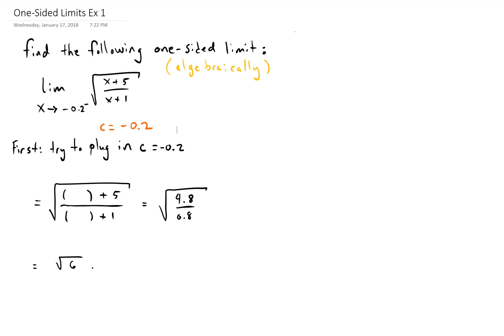Hi, this is Bradley Bush. Today we're going to talk about finding a one-sided limit algebraically. The limit we are dealing with today is the limit of the square root of quantity x plus 5 divided by x plus 1 as x approaches negative 0.2 from the left. We know we're dealing with a one-sided limit coming from the left because the negative 0.2 has a little negative sign up there in the exponent.